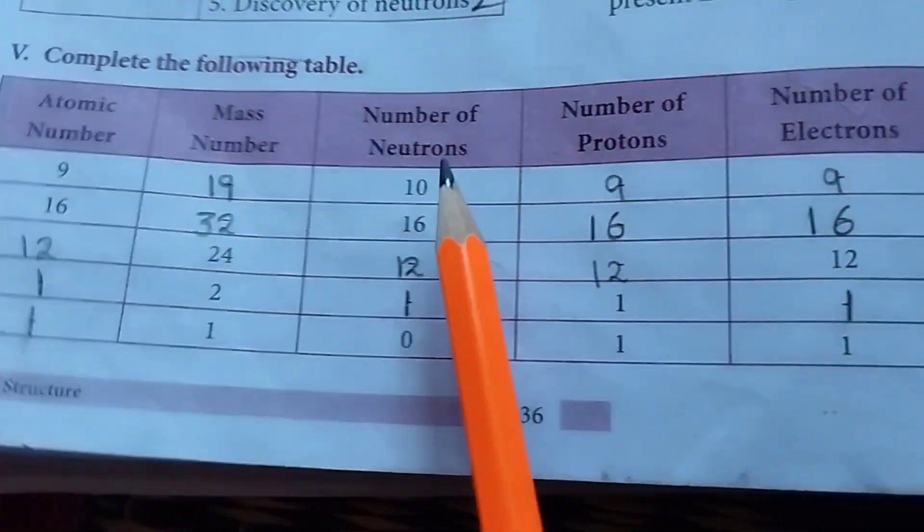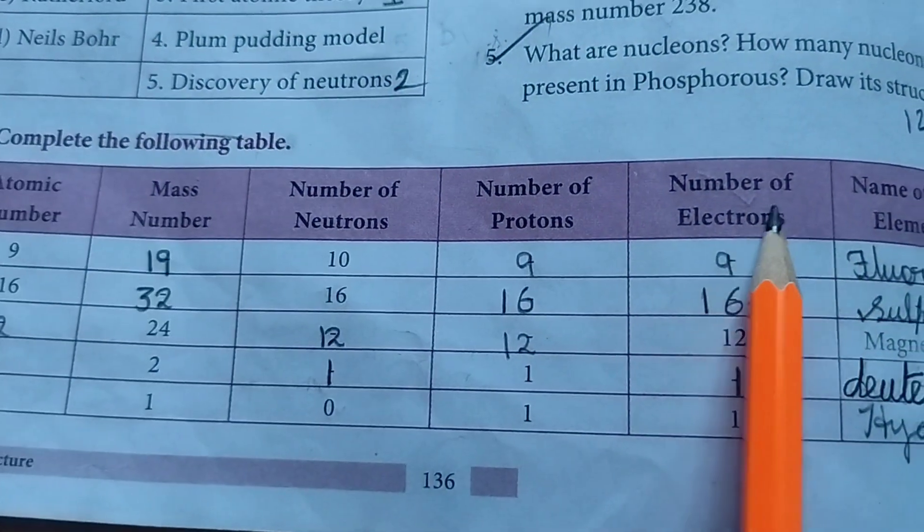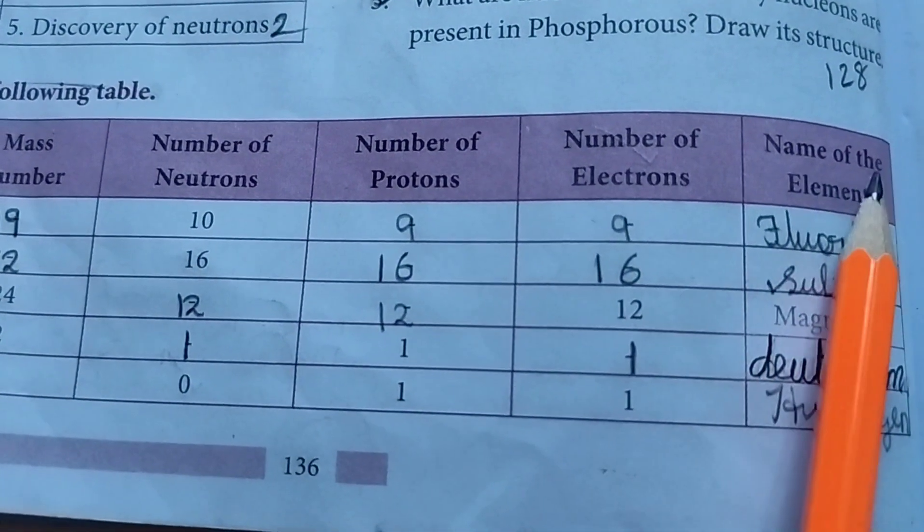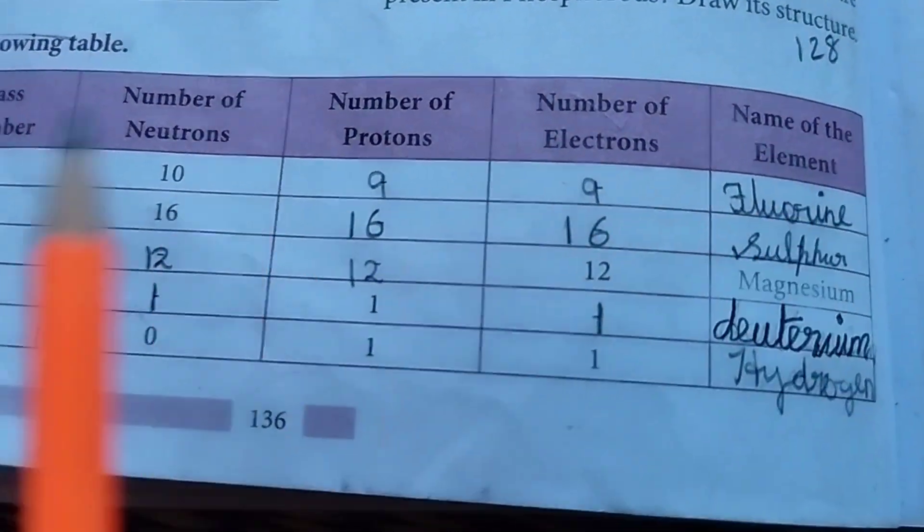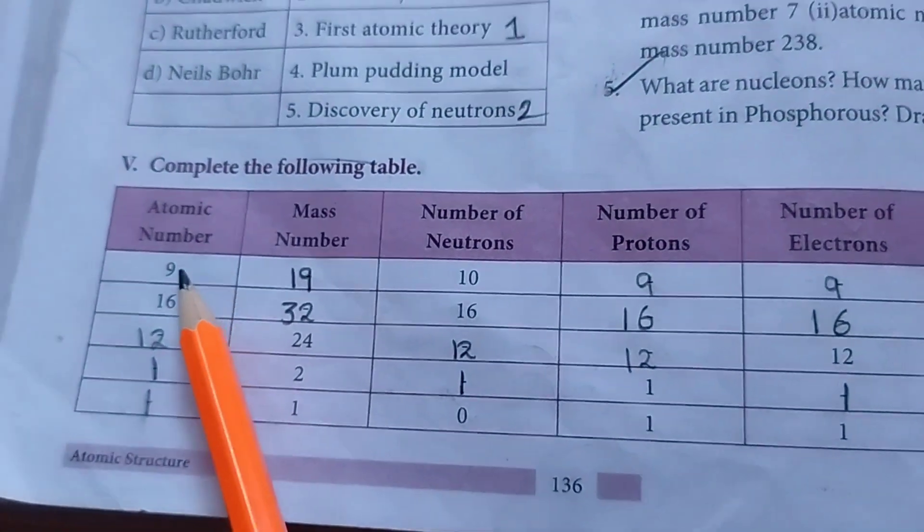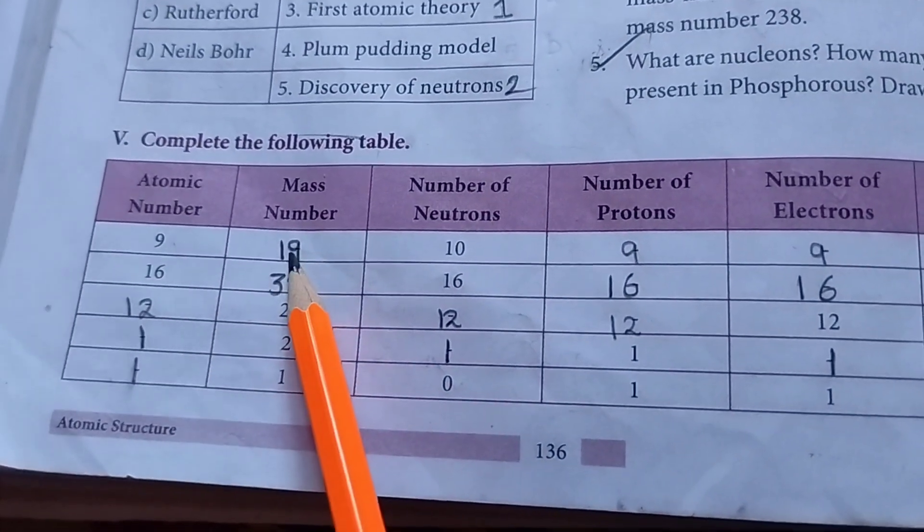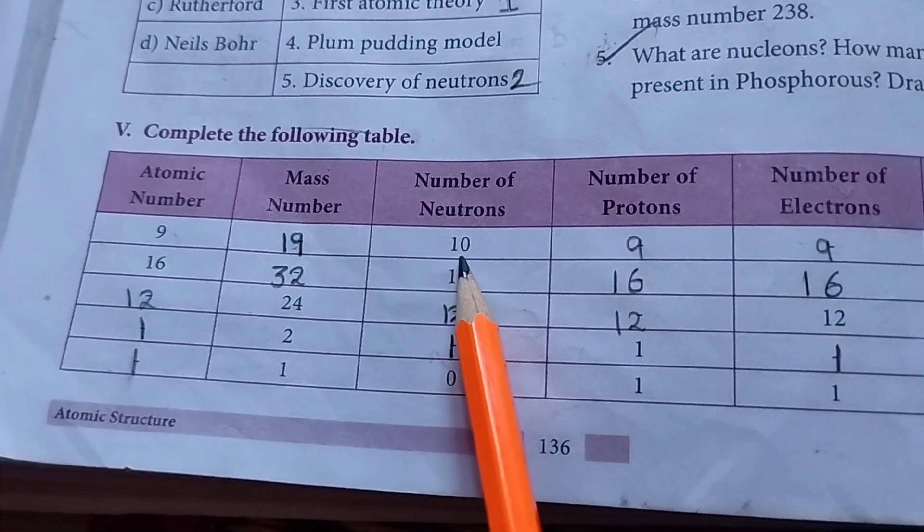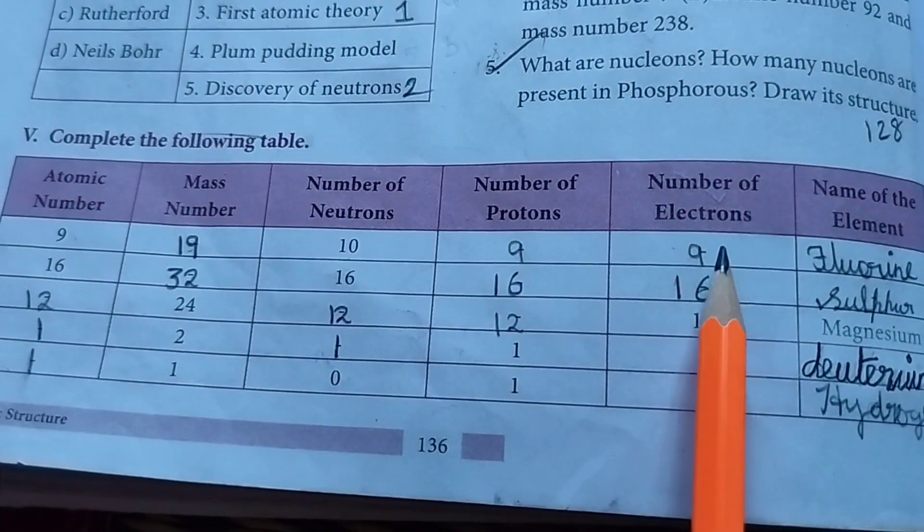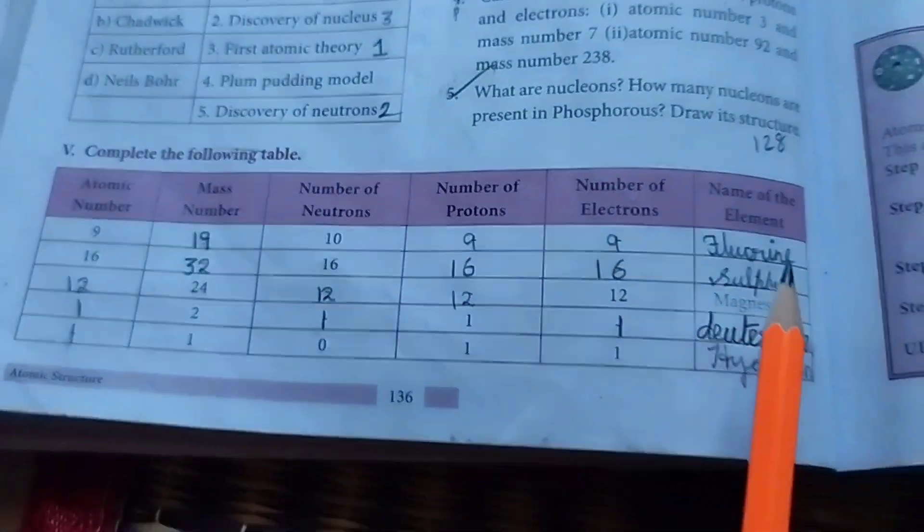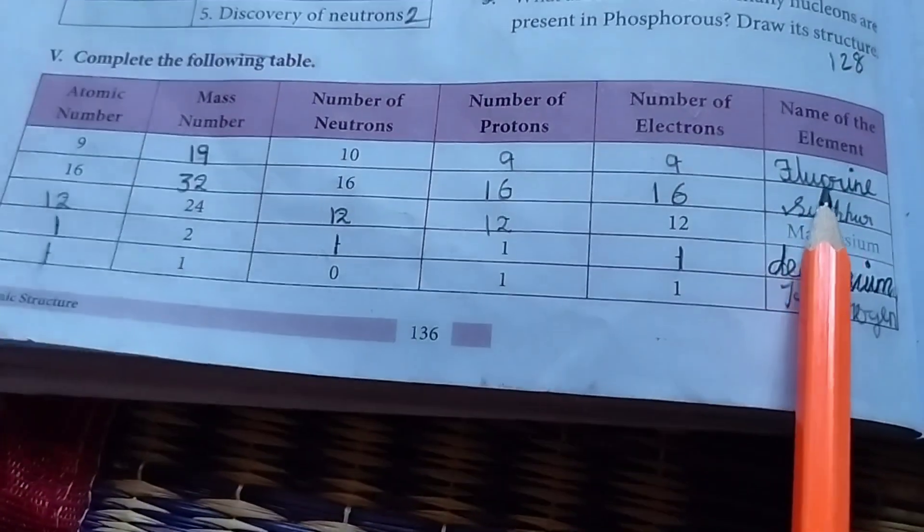Atomic number. Mass number. Number of neutrons. Number of protons. Number of electrons. Then name of the elements. And given the atomic number one the 9. Mass number 19. Number of neutrons 10. Number of protons 9. Number of electrons one the 9. Name of the element. Fluorine.